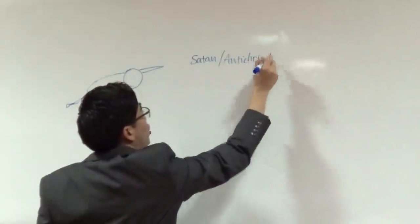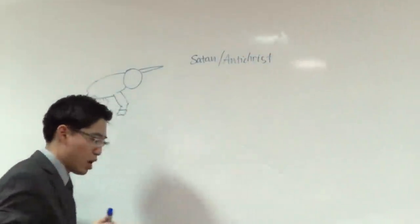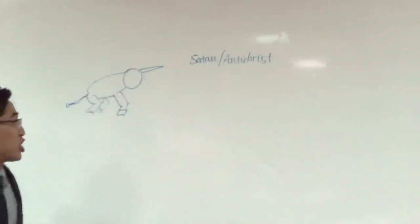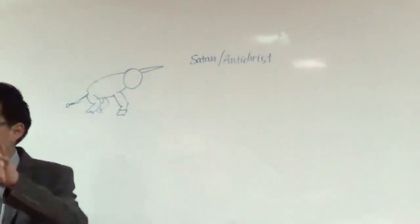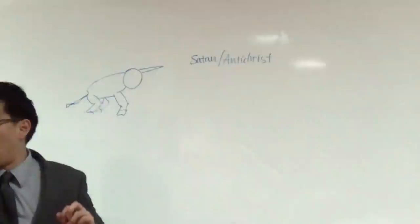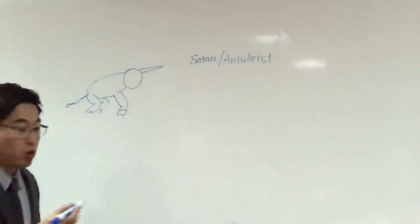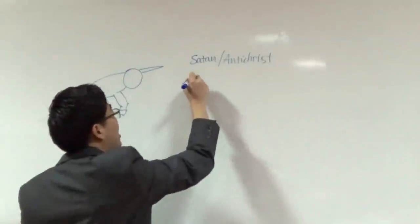Not only that, Daniel chapter 7 or 8, it mentions a little horn out of all the other horns. As if it's like one horn, one special horn, like a unicorn. And the Bible says that is the Antichrist.